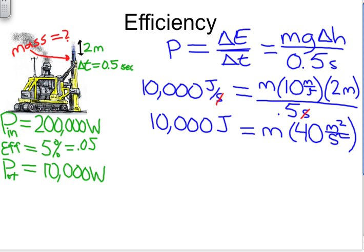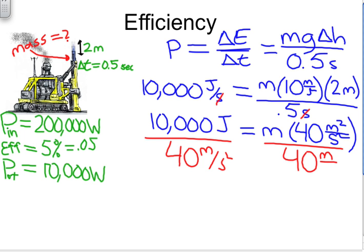So now, to solve for mass, we simply divide both sides by the 40 meters per second squared. And these guys cancel. We have now isolated our variable for mass.